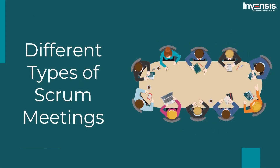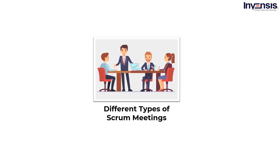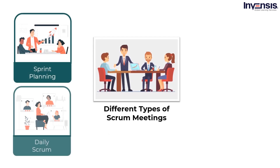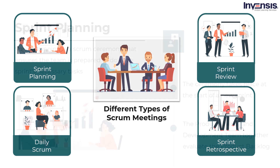Let us move on to our next topic and understand the different types of Scrum meetings. The different types of Scrum meetings are also known as Scrum ceremonies. These ceremonies give a framework for teams to complete work in a structured way, enable teams to communicate effectively, and increase the team's overall efficiency. There are four Scrum ceremonies: Sprint Planning, Daily Scrum, Sprint Review, and Sprint Retrospective.